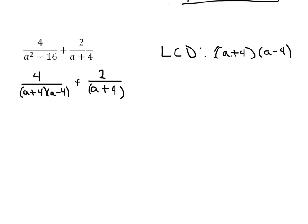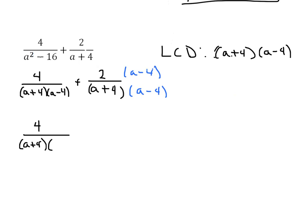This first fraction already has the common denominator. This one is missing a factor of a minus 4, so we're going to multiply the top and the bottom by a minus 4. Our first fraction is going to be 4 over a plus 4 times a minus 4.